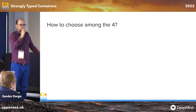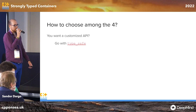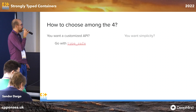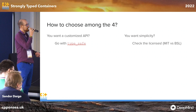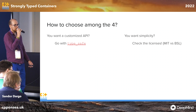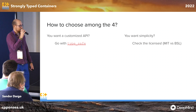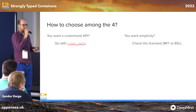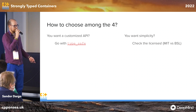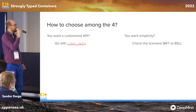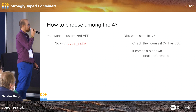So how do we choose? If you want to customize the API, go with typesafe. If you want simplicity, then check the licenses — they are either MIT or BSL. According to my colleagues who deal with licenses, you could take any of them — it's not an issue. Then it comes down a bit to your personal preferences.